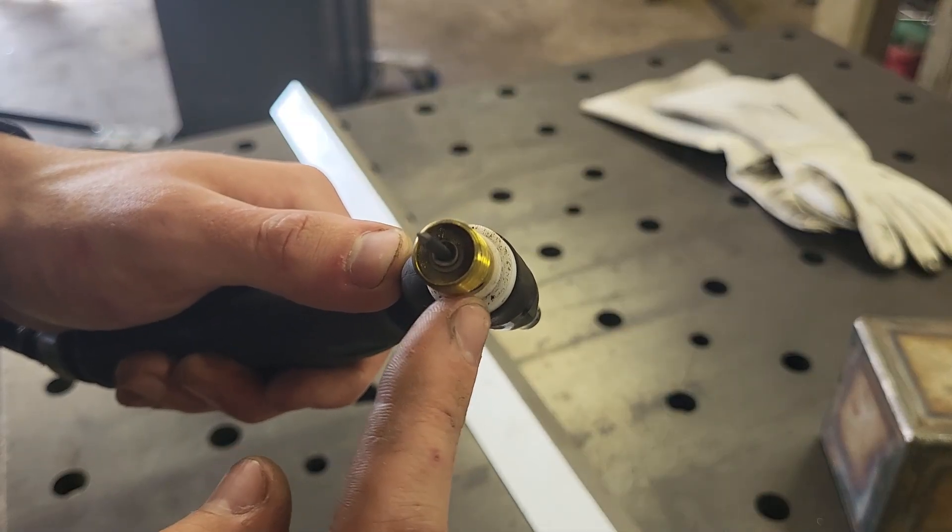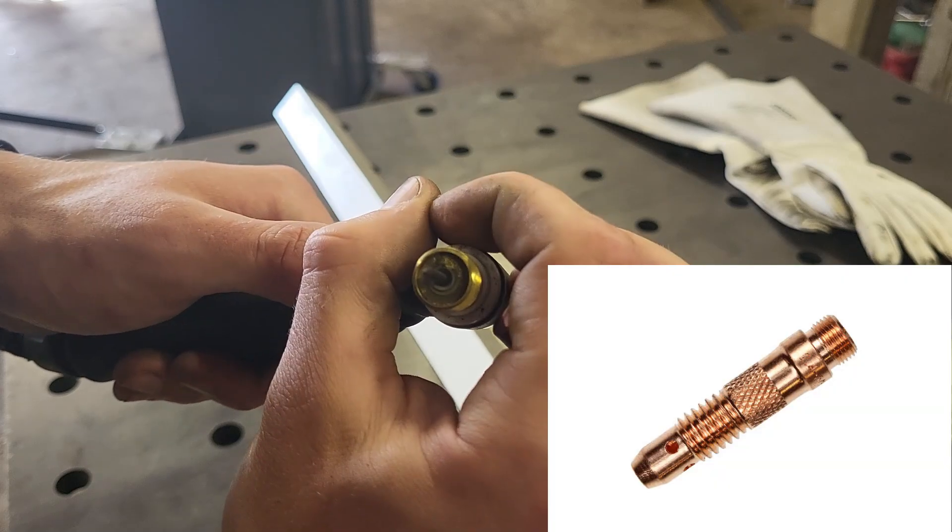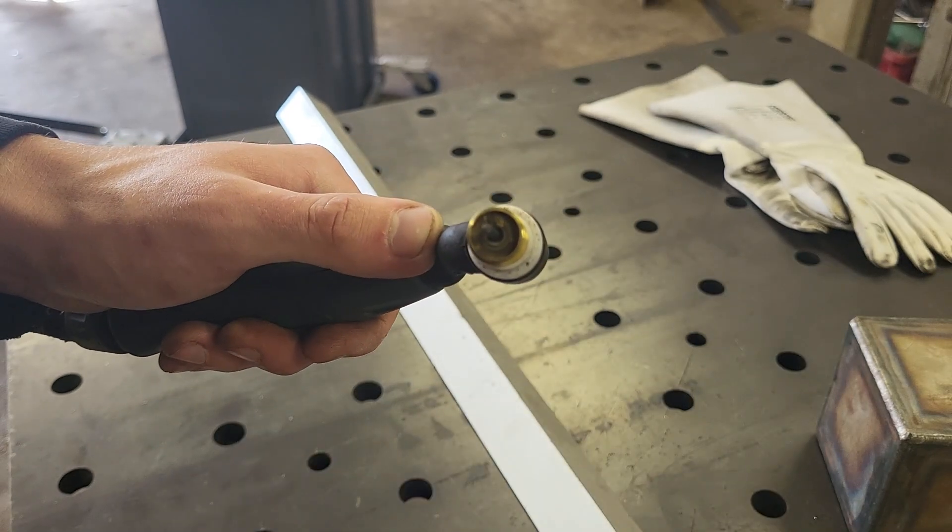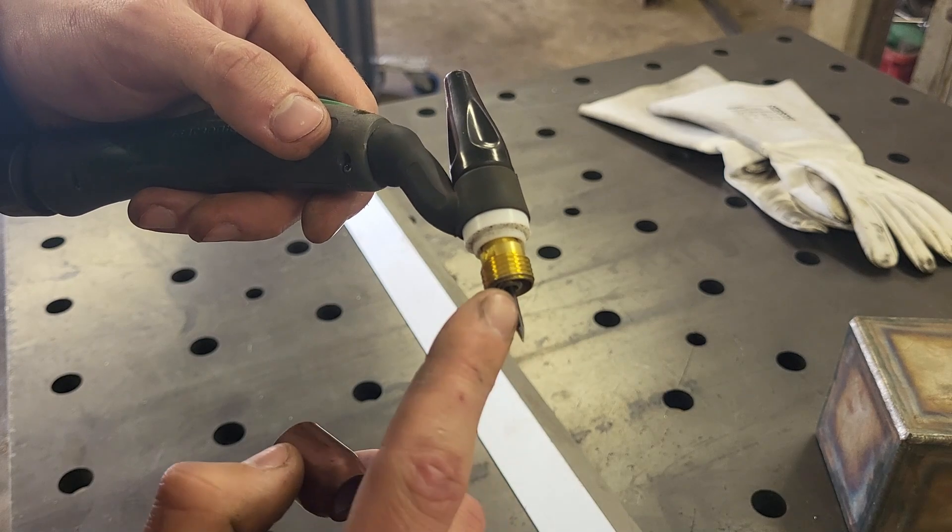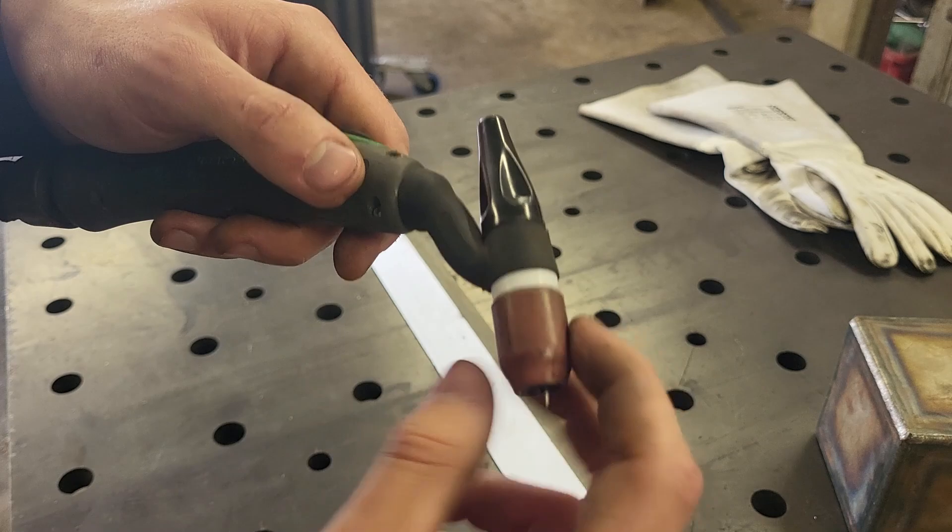The argon flows from a diffuser that can either look like this, which is a sieve, or it can just be a pipe with four holes going in each direction. To obtain proper shielding of both the electrode and the material you're welding on, a ceramic cup is usually threaded on.